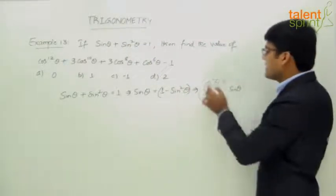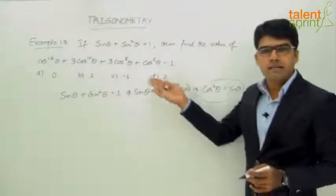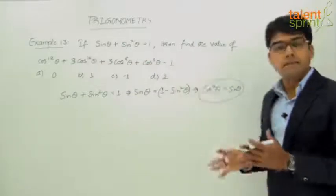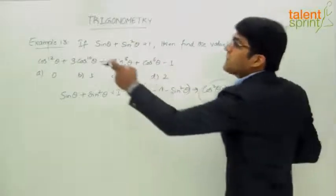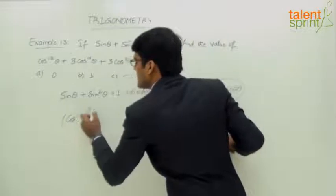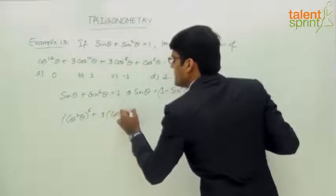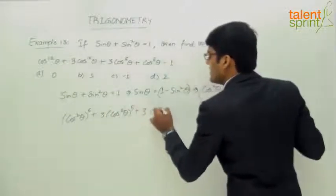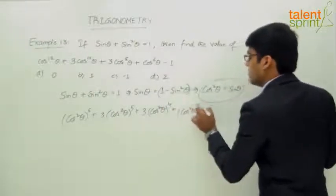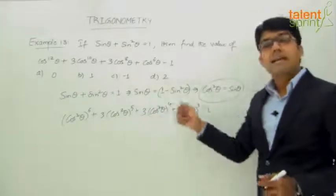Now that we know cos²θ = sin θ, if you look at the expression, each term is in terms of cos²θ — it is some power of cos²θ. So let's substitute sin θ in place of cos²θ and see if we get the required answer. cos¹²θ can be taken as (cos²θ)⁶, and 3cos¹⁰θ as 3(cos²θ)⁵, plus 3(cos²θ)⁴, plus (cos²θ)³, minus 1.